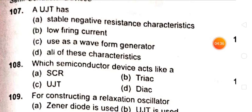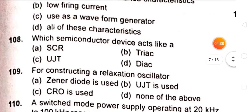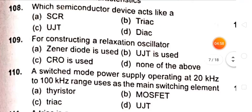Which semiconductor device acts like A? Answer is C, UJT. For constructing a relaxation oscillator, UJT is used.